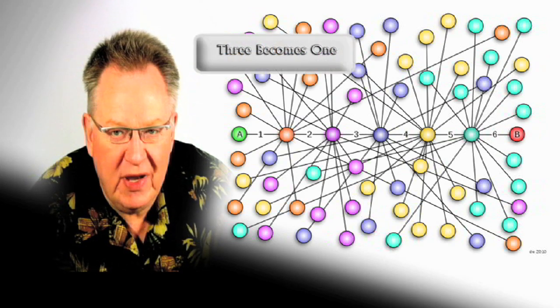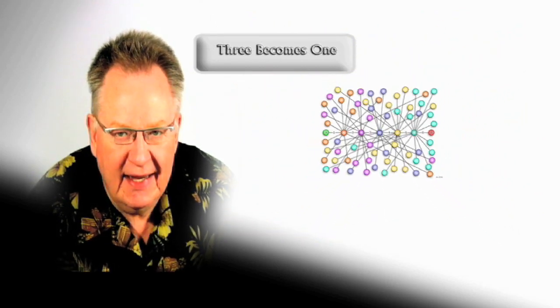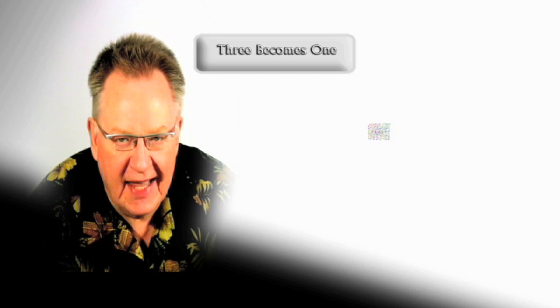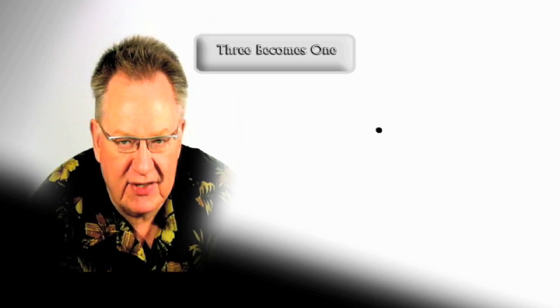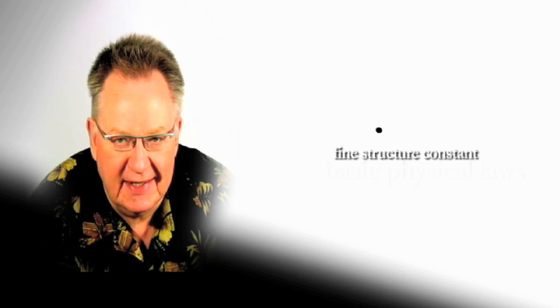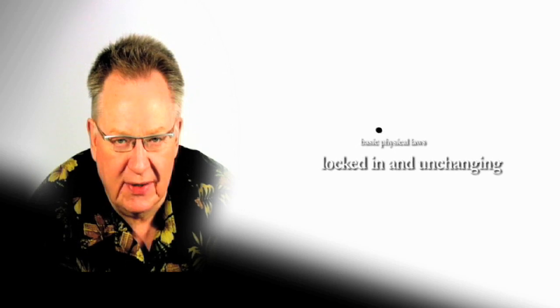Last month in Three Becomes One, we returned to the idea that all six dimensions become a point, indicating a position within the multiverse landscape in the seventh dimension and above with my approach to visualizing the extra dimensions. And that's why the fine structure constant and basic physical laws stay locked in and unchanging for our particular universe.